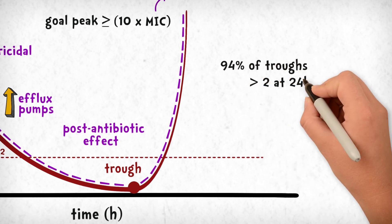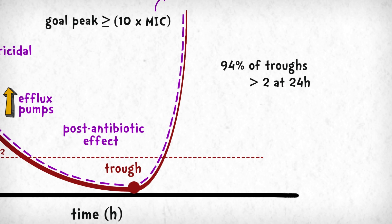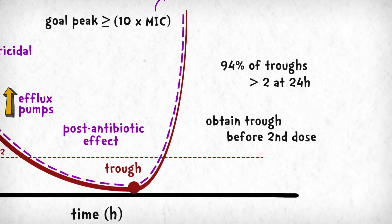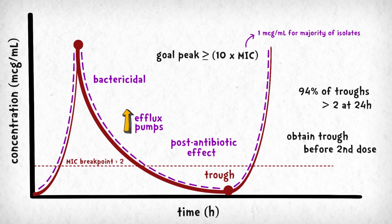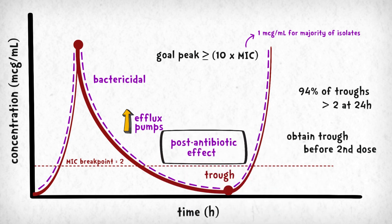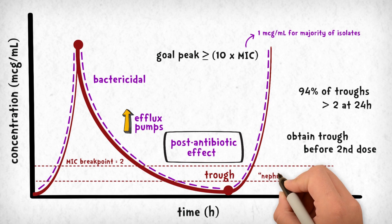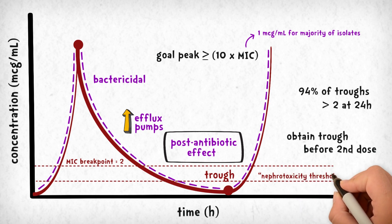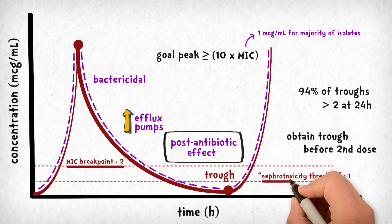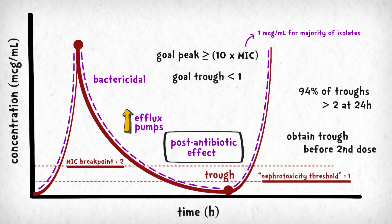Re-sensitizing the bacteria ensures that the next dose has maximal bactericidal action. 94% of troughs remain above 2 micrograms per ml 24 hours after the first dose, so trough monitoring should begin right away before the second dose is administered. We can utilize this extended activity after the trough falls below 2 to essentially prevent accumulation. Ultimately, we want the trough to continue to fall below the nephrotoxicity threshold, which is a serum level of 1 microgram per ml. This is why our trough goal is less than 1.